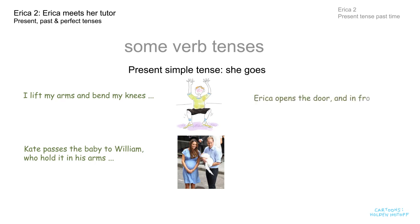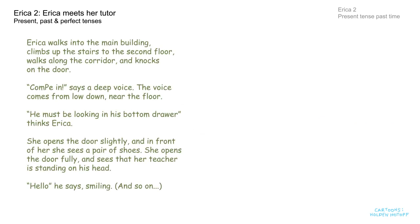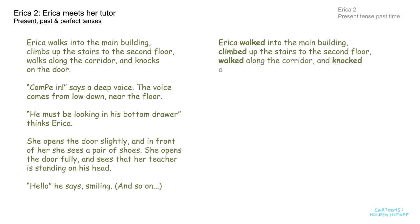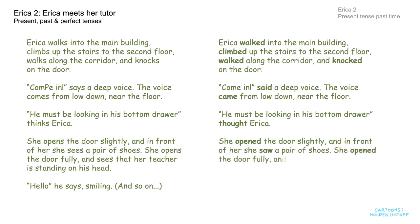'Erica opens the door and in front of her she sees a pair of shoes.' That's what we wrote. But we can also say, 'Erica opened the door and in front of her she saw a pair of shoes.' I could tell the whole story in the past tense, and I will now tell you the first part. Here's the original and here's the past tense version: 'Erica walked into the main building, climbed up the stairs to the second floor, walked along the corridor and knocked on the door. Come in, said a deep voice. The voice came from low down, near the floor. He must be looking in his bottom drawer, thought Erica. She opened the door slightly and in front of her she saw a pair of shoes. She opened the door fully and saw that her teacher was standing on his head. Hello, he said smiling,' and so on.